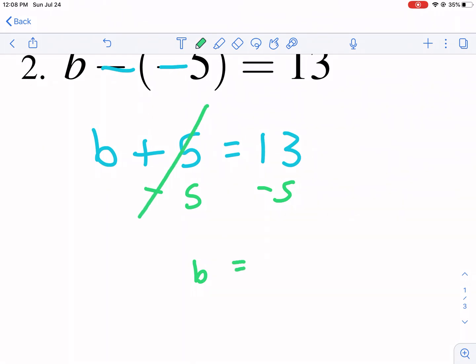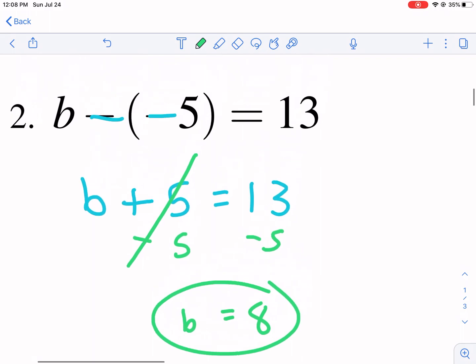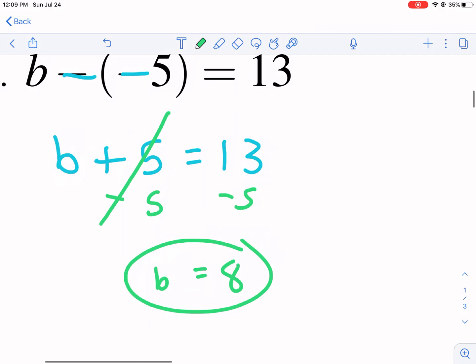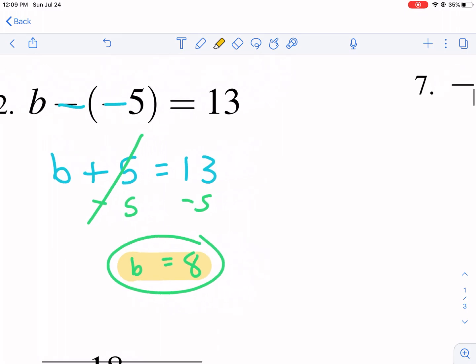Now we have 13 minus 5, and that is 8. So we have b equals 8 as our answer.